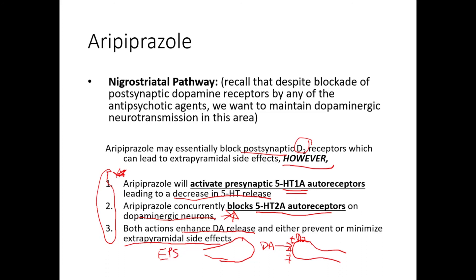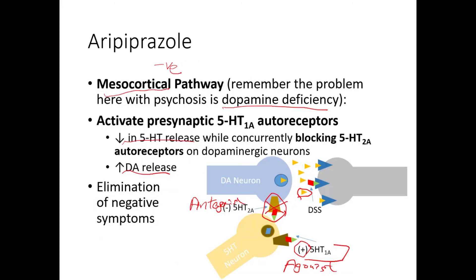Aripiprazole is a very important drug and the concepts are more complicated than other drugs, mainly because it acts sometimes as an agonist and sometimes as an antagonist. Be clear in your head about which is which, and in which case. Know which receptors it is interacting with — primarily D2, 5-HT1A, and 5-HT2A. That's all for aripiprazole — thank you for watching and listening.